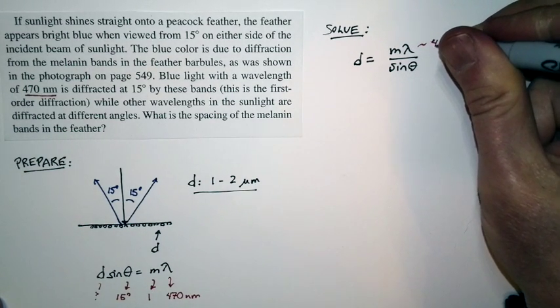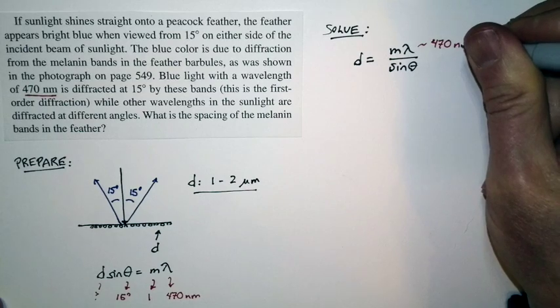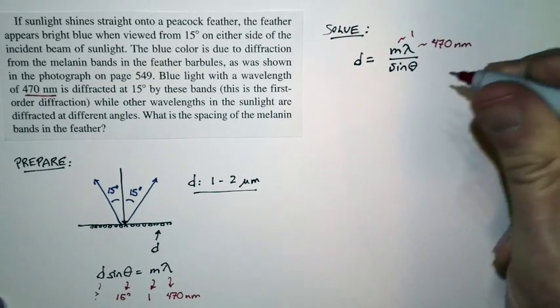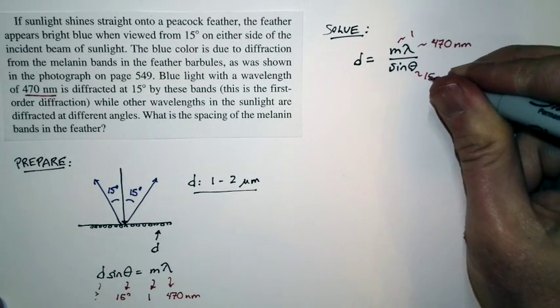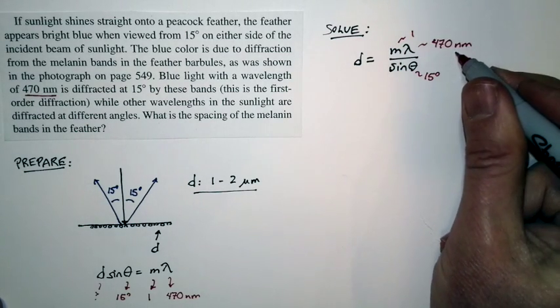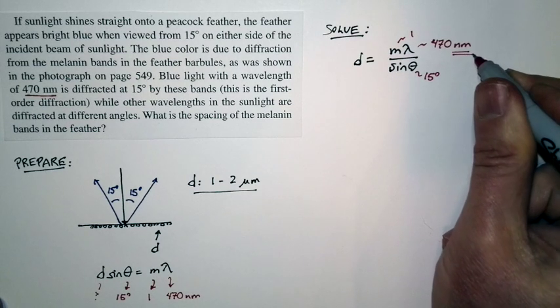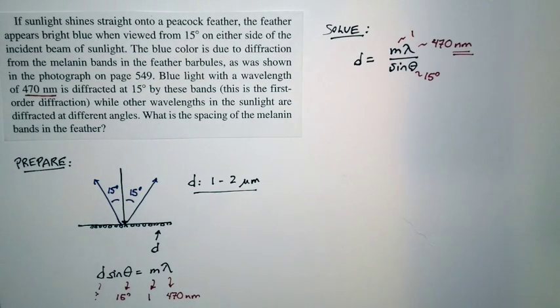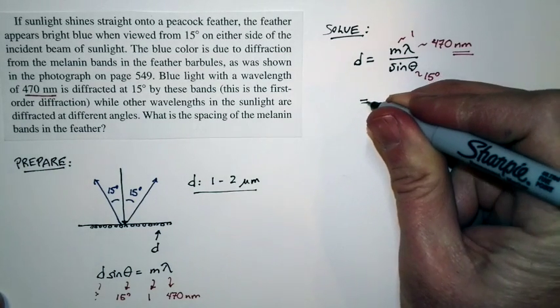Lambda is equal to 470 nanometers. M is equal to 1. Theta is equal to 15 degrees. Now sine of theta is just a number. M is just a number. So I'm going to leave this wavelength in nanometers. And so the result will be returned in nanometers. If I put these numbers in my calculator and I compute a value for D,